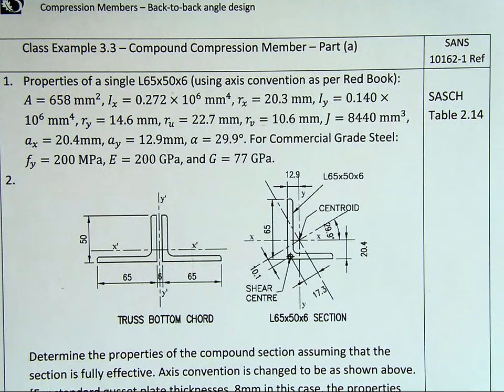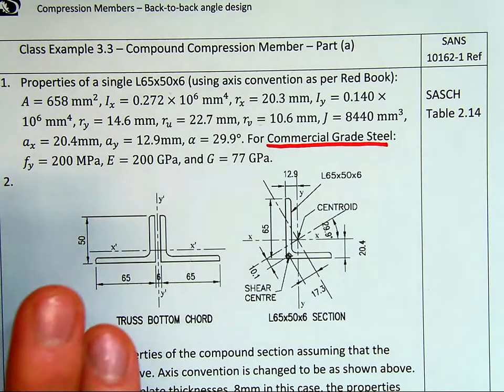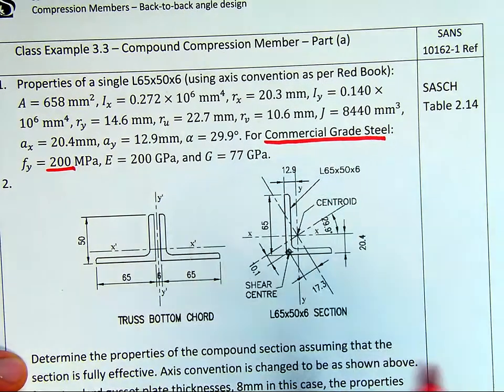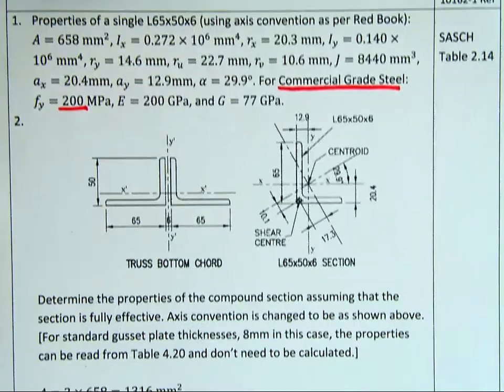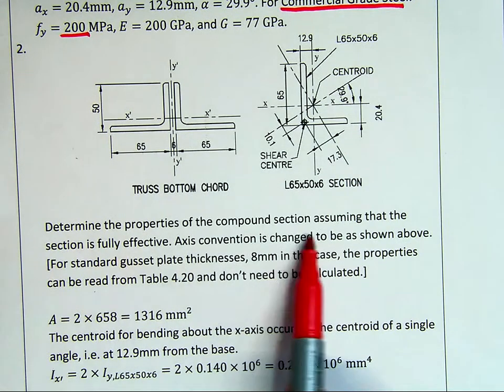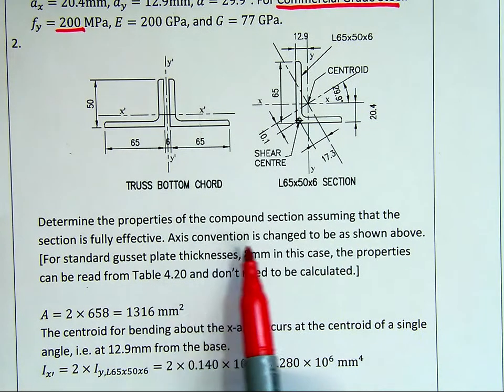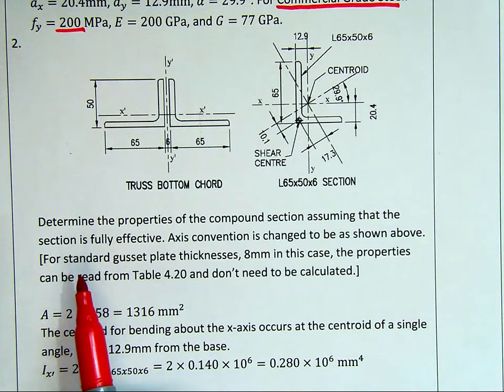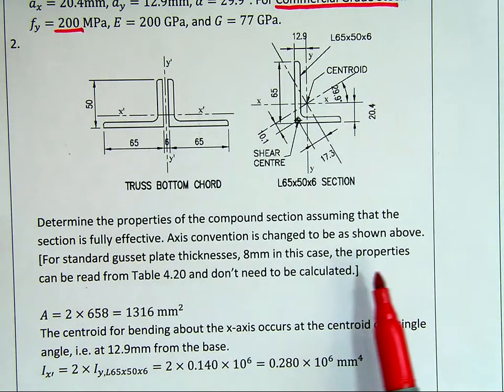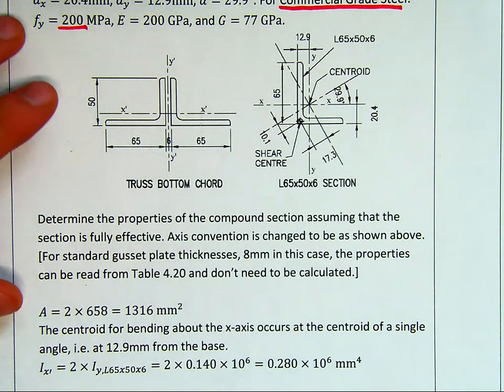This we were also told is commercial grade. This is sort of an anomaly in South Africa. We have this strange grade called commercial grade. It's generally only for smaller angles and other types of sections, not for bigger structural sections. It has a 200 MPa yield. When we determine the properties of the compound angle, first determine the properties assuming the section is fully effective, so we're not going to reduce it for being class 4. Axis convention is to be changed as shown above.